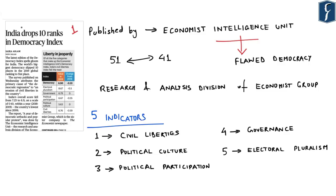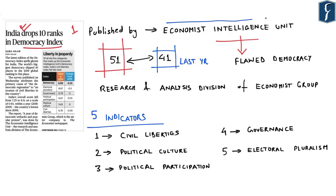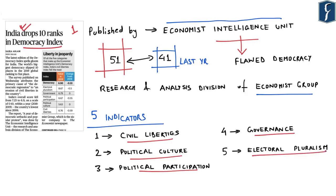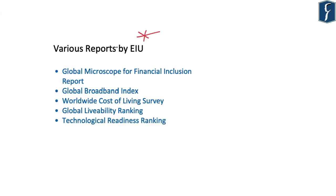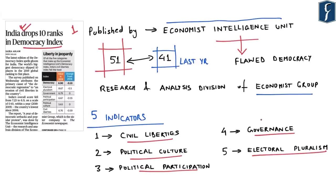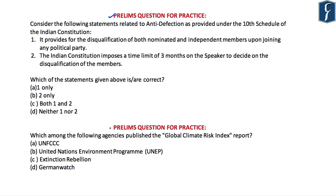The next article appears on page one: 'India Drops 10 Ranks in Democracy Index,' now ranked 51 compared to 41 last year. The Democracy Index is published by the Economist Intelligence Unit (EIU), the research and analysis division of The Economist Group. It ranks democracies on five indicators: civil liberties, political culture, political participation, governance, and electoral pluralism. Other EIU reports important from a Prelims perspective include the Global Microscope for Financial Inclusion, Global Broadband Index, Worldwide Cost of Living Survey, Global Liveability Ranking, and Technological Readiness Ranking.